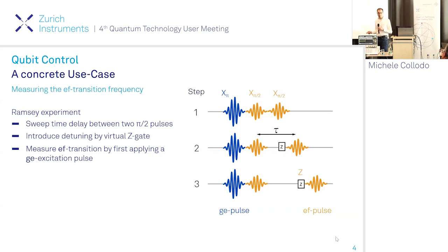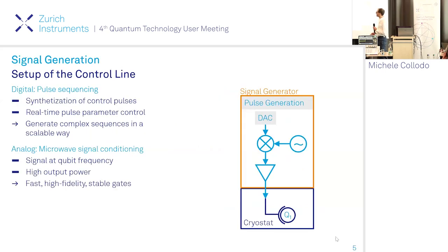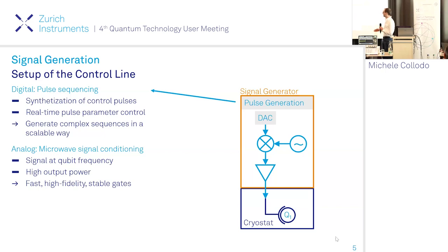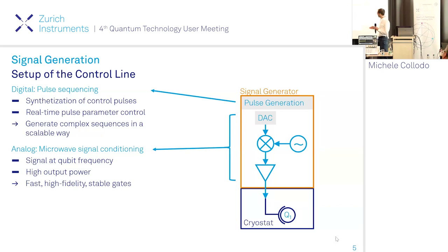Now let's look at how the signal generation is set up. The signal generator drives the qubit in our cryostat. It consists of a digital part, responsible for synthesizing the control pulses, and thanks to additional features like real-time control over pulse parameters, we can generate complex sequences in a scalable way. On the other hand, the analog part is responsible for providing the signal at qubit frequency with appropriate power, enabling fast and high fidelity gates.